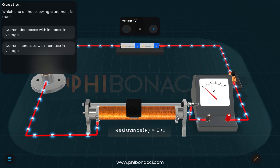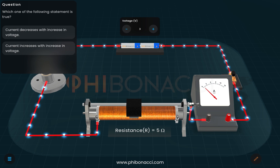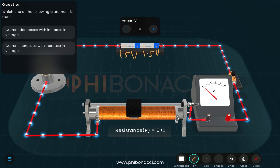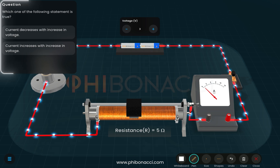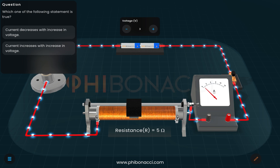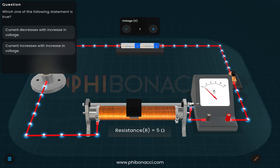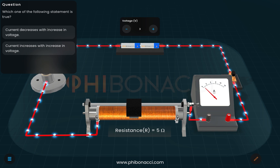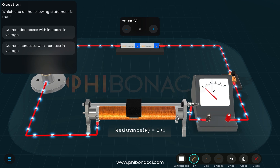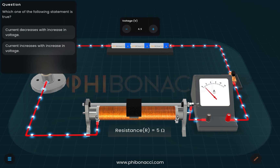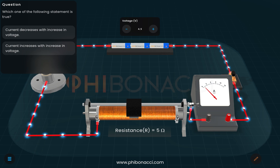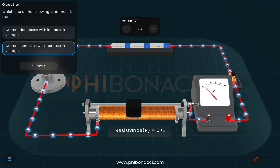Now we click on the battery. With two cells, our battery voltage is 1.5 plus 1.5, giving us 3 volts. The question is: does current decrease or increase with an increase in voltage? We increase the battery voltage and observe the ammeter — the pointer moves ahead, meaning current has increased. So the correct answer is: current increases with an increase in voltage.